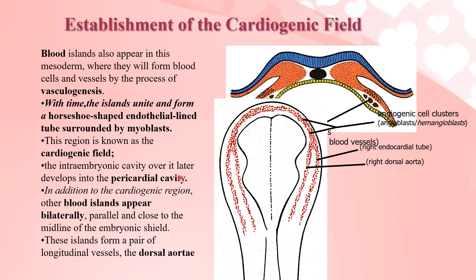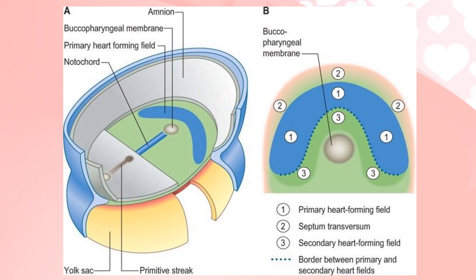The intraembryonic cavity over this area develops into the pericardial cavity. In addition to the cardiogenic region, the blood islands appear bilaterally, forming the dorsal aorta on both sides.